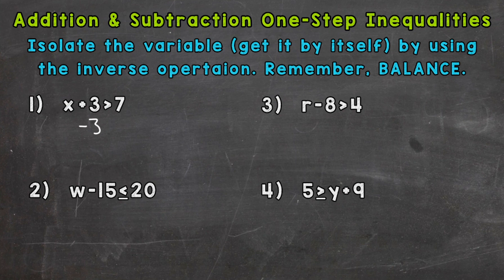Now, we do need to remember balance. So whatever we do to one side, we have to do to the other. So if we subtract 3 from the left, we have to subtract 3 from the right. Our x is now isolated. We can bring down our inequality sign. And 7 minus 3 is 4. So our answer is x is greater than 4.